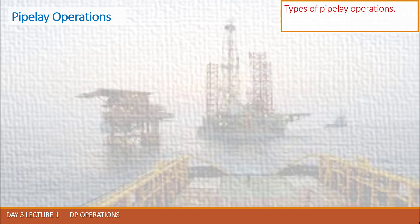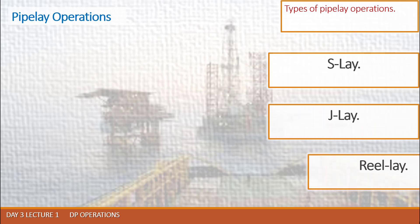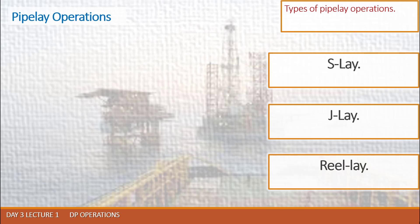Pipe tension values are communicated to the DP system by means of load cells incorporated in the tensioners. The DP system continuously works with this external force, using thruster power to maintain the tension. Now, let's watch the subject movie about pipeline operations, and after that I will summarize the information about the different types of pipe laying methods.